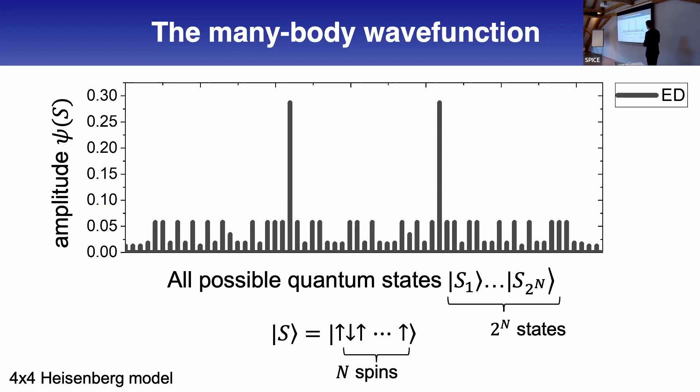The reason is very simple. This is the problem of all many-body physics. If you want to simulate a quantum problem, you always deal with an exponentially large Hilbert space. You need the amplitude and phase for all possible states. This Hilbert space is exponentially large, with 2^N states. On your classical computer, your memory quickly runs out with a system size of a couple tens of spins.